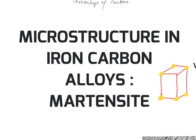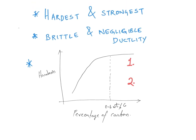Now, in the microstructure the iron atoms are shown here, and the carbon atoms — shown in black — will occupy certain interstitial positions in the crystal structure. This is how the microstructure of martensite will look like. Now let's start talking about the mechanical properties of this particular microstructure.